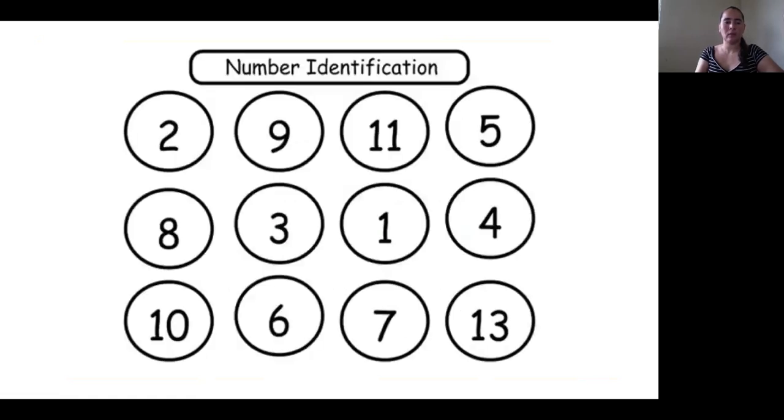Now let us identify the numbers that we've been studying from one to 13. Find the number one. Very good, this is the number one. Number two. Very good. Number three. This is the number three. Number four. Number five. Number six.